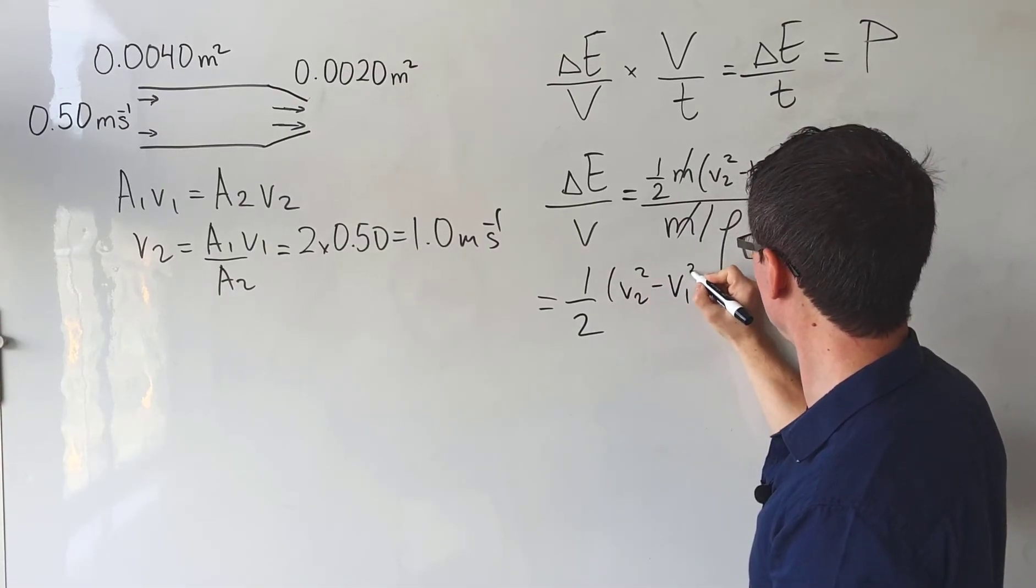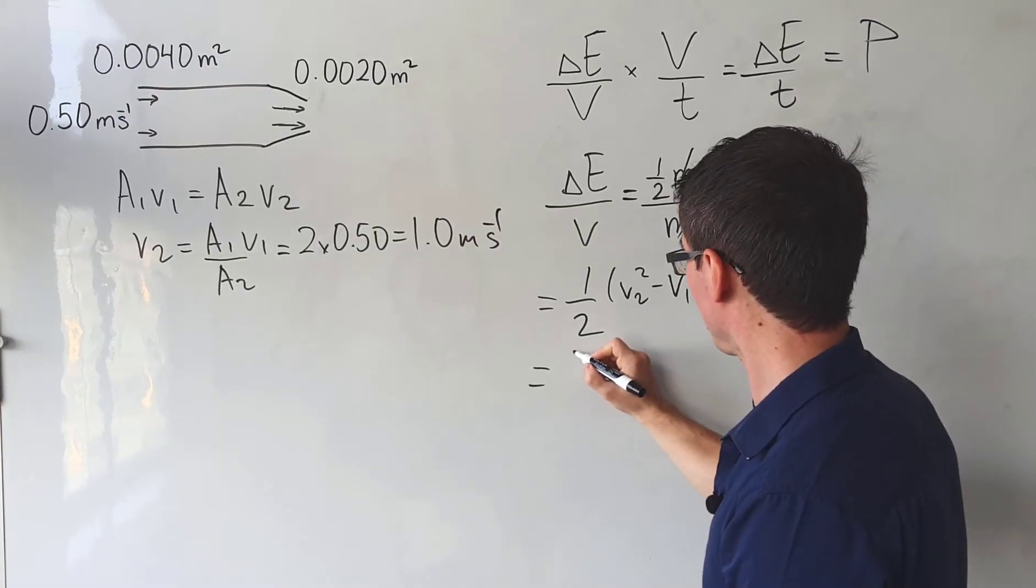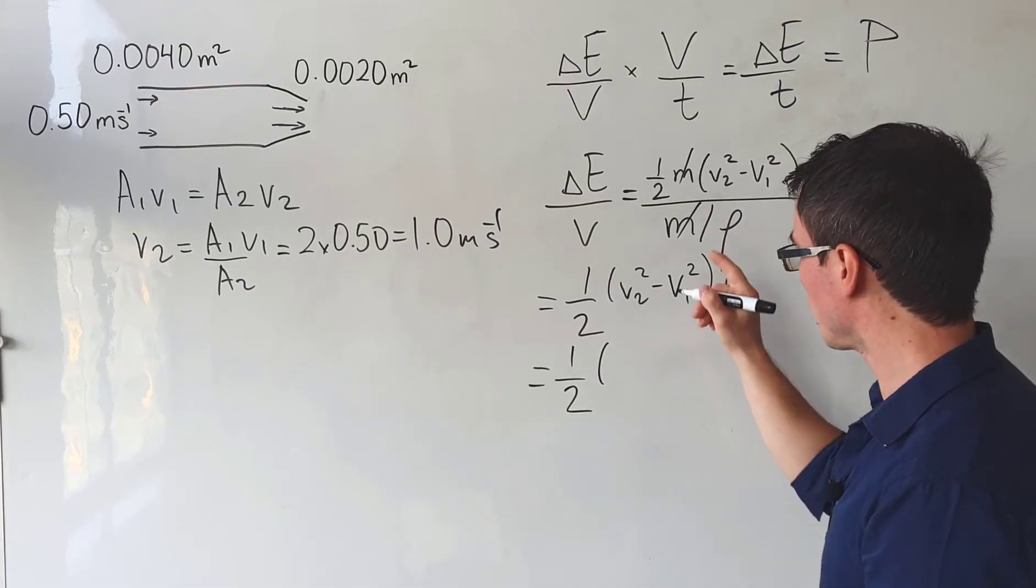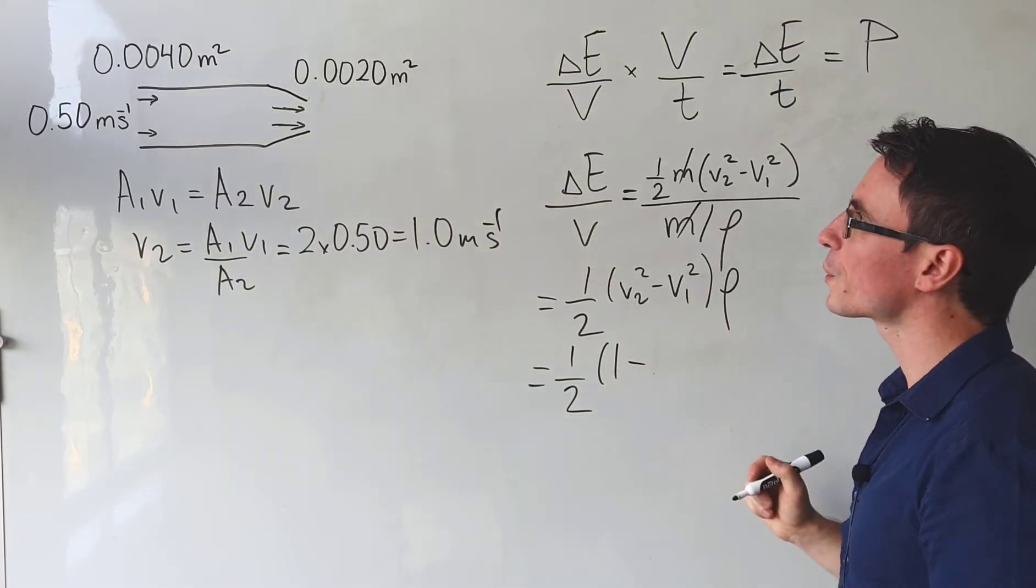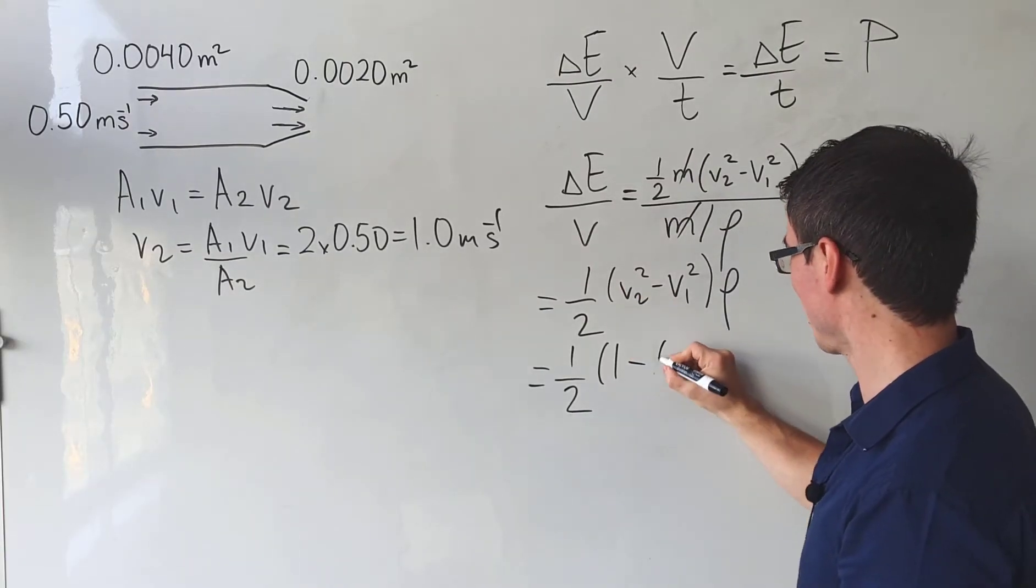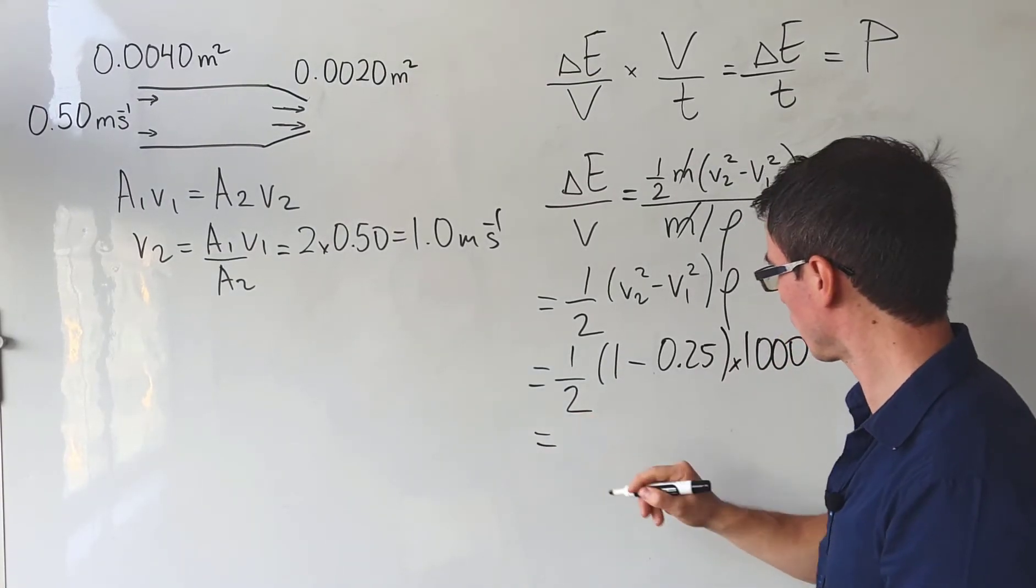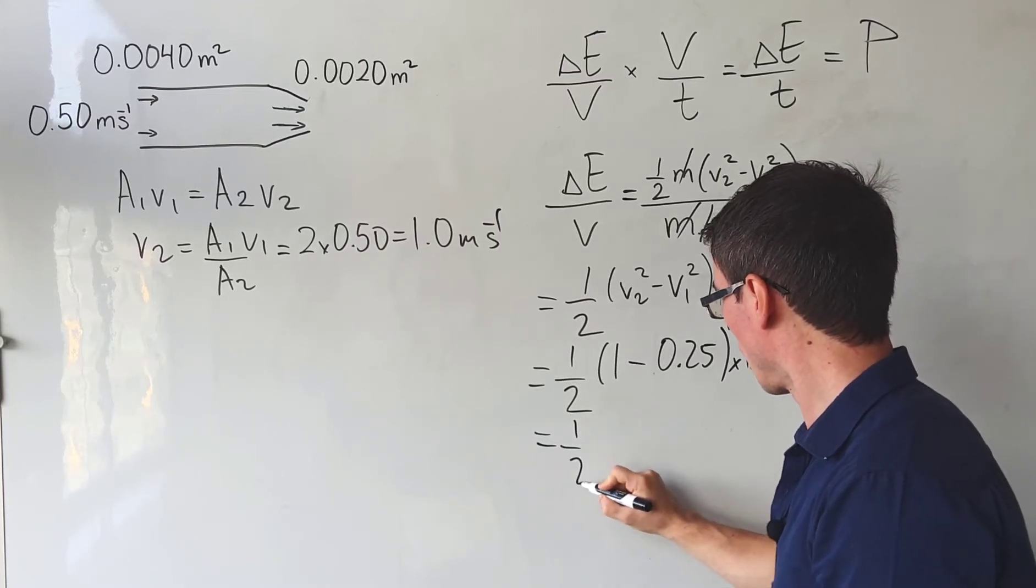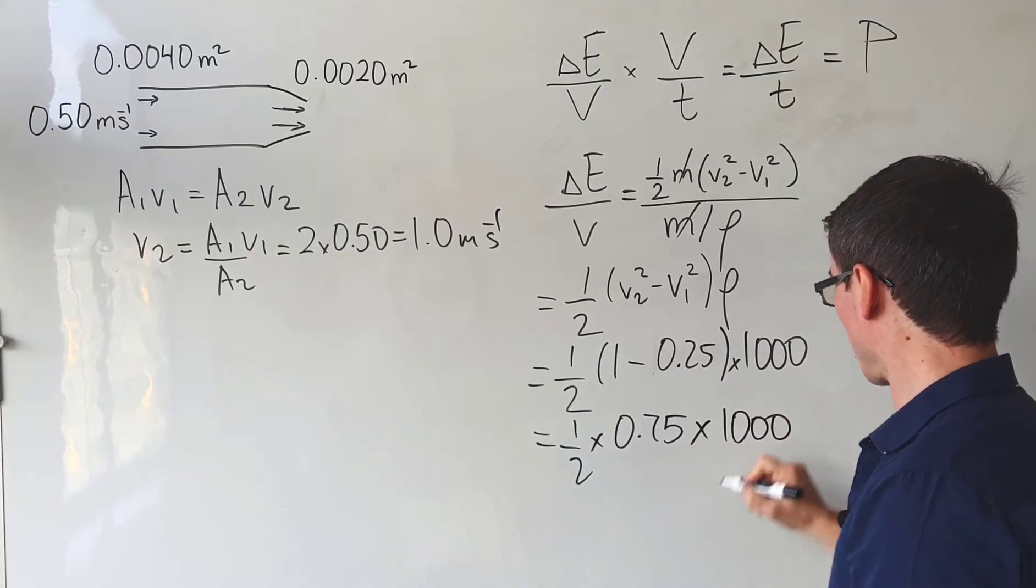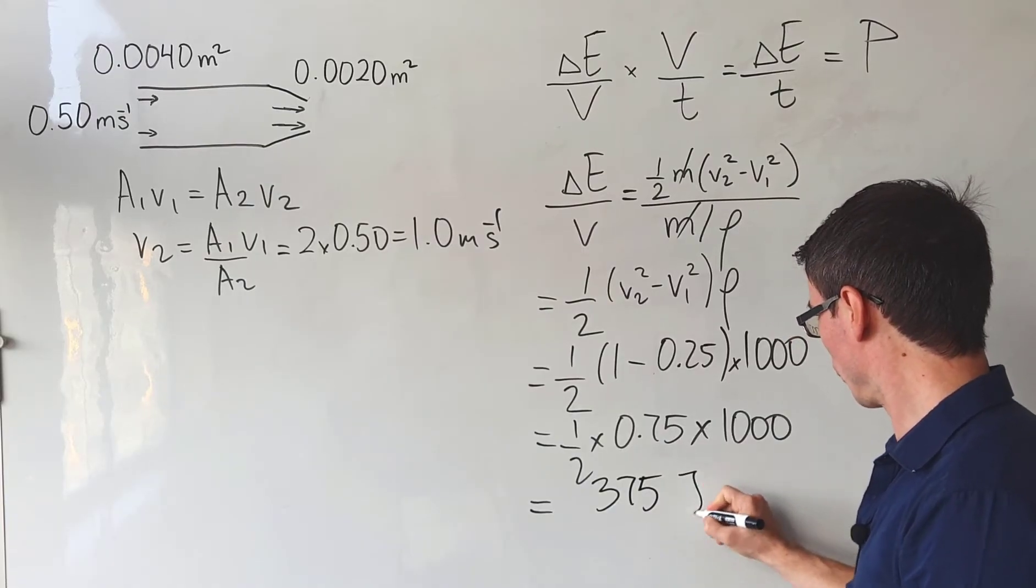We can cancel out the masses, and what we're left with is a half times V2 squared minus V1 squared multiplied by the density. This will be equal to a half times 1 minus 0.25, multiplied by the density which is 1000. This will be equal to a half times 0.75 times 1000, which gives us 375 joules per cubic meter.